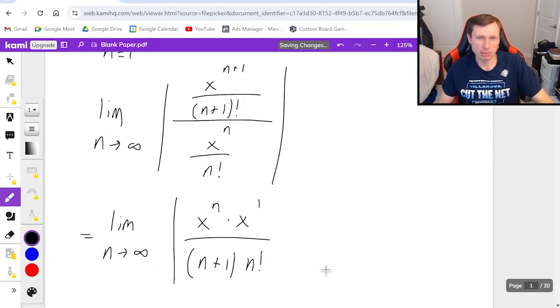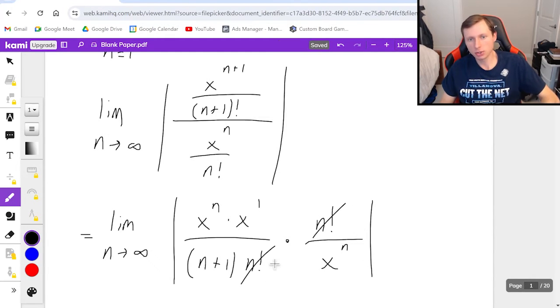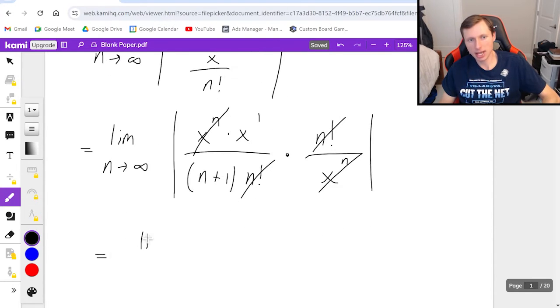And if you didn't know that I recommend you memorize it because it is important and you'll save yourself some time on the test. And then times the reciprocal of the denominator meaning n factorial over x to the n close absolute value sign. So the n factorials cancel, the x to the ns cancel, and we just get the limit as n goes to infinity of the absolute value of x over n plus one.